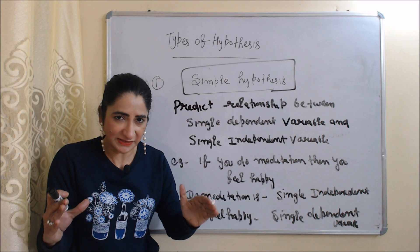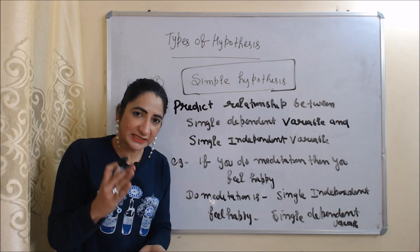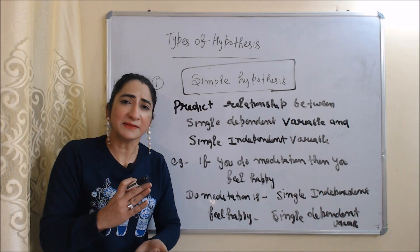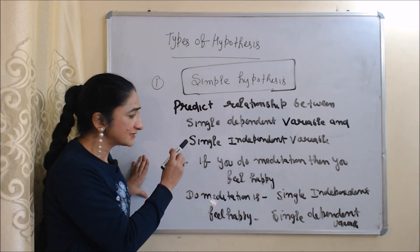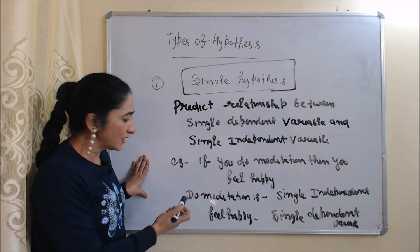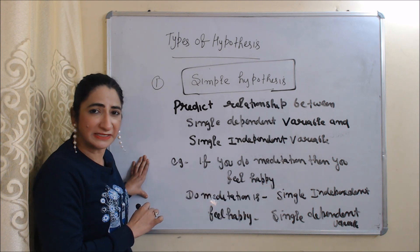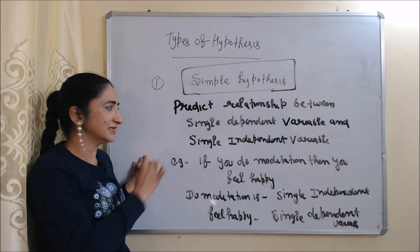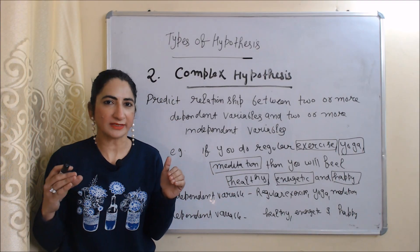For example, if you eat healthy then you will live longer — eating healthy is the cause (independent variable) and living longer is the effect (dependent variable). The first type is simple hypothesis. Simple hypothesis predicts the relationship between a single independent variable and a single dependent variable. For example, if you do meditation then you feel happy. Here, 'do meditation' is the single independent variable and 'feel happy' is the single dependent variable.